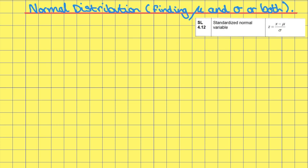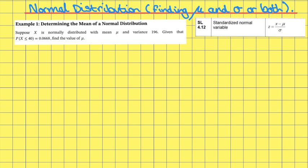In this video we're going to be taking a look at the normal distribution. In particular, we're going to be looking at how we can find the mean, the standard deviation, or both. In the formula booklet we are given a formula that helps us standardize any normal variable. It is given by the formula: z is equal to x minus the mean over the standard deviation.